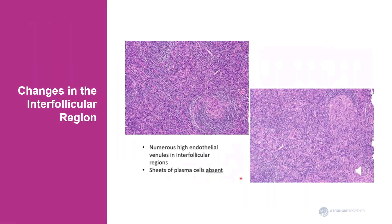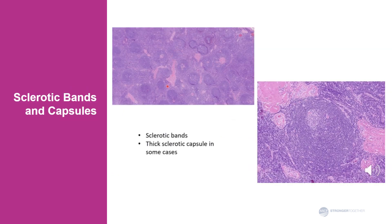Not only follicles show changes — prominent changes are also seen in the interfollicular region, the region in between the follicles. The most conspicuous is the marked increase in vascularity, and the vessels that proliferate are called high endothelial venules. An important pertinent negative is that the sheets of plasma cells typically seen in the plasma cell variant of Castleman disease are absent in the hyaline vascular variant. Some cases also show sclerotic bands, as demonstrated here — these pink structures are sclerotic bands.